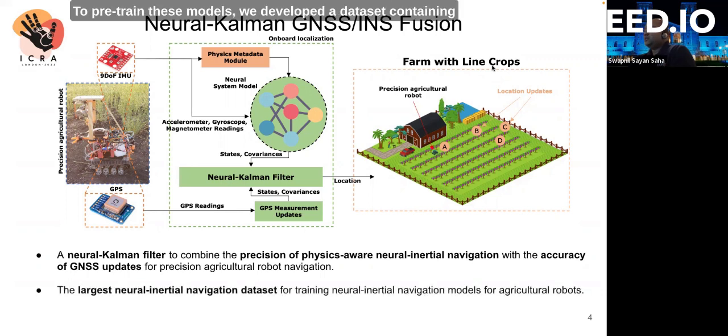To pre-train these models, we developed a dataset containing six hours of high-fidelity IMU, GPS, and ground-truth position data from a real agricultural robot.